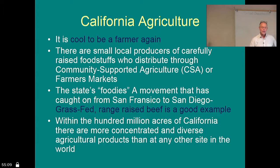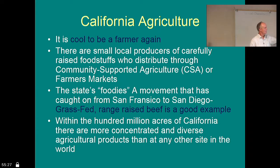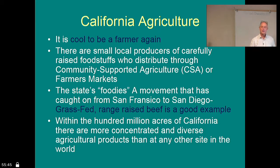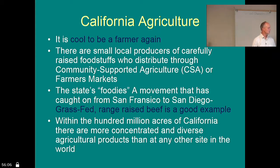It's cool to be a farmer again. A lot of people are involved in community supported agriculture, and we have a farmers market right here at the college on Thursdays. There's a massive movement of what we call 'foodies' — people who take their food very seriously, interested in organic, range-raised, or grass-fed meat. Within 100 million acres of California, there are more concentrated and diverse agricultural products than any other site in the world, which makes it fun for us to study.